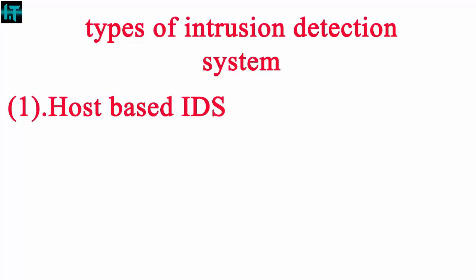Host-based systems were the first type of intrusion detection system to be developed and implemented. These systems collect and analyze data organized on a computer that hosts a service such as a web server. Once the data is aggregated, it can be analyzed locally or sent to a separate central analyzing machine. Host-based systems detect unauthorized insider activity and are also effective in detecting unauthorized file modification. They run on individual hosts or devices on the network.